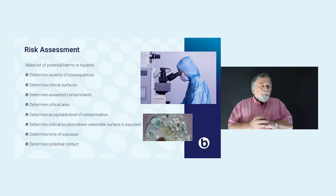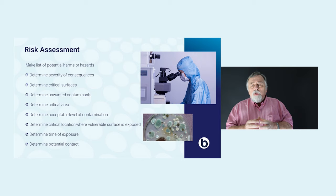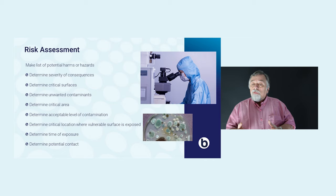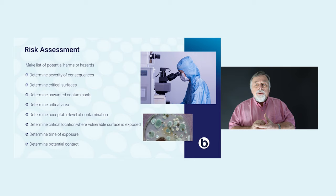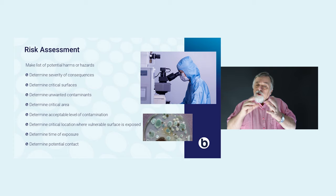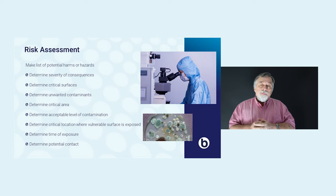The next step is to determine the location where this critical area is exposed to the environment. You have to determine the time of exposure — and if you already know how to reduce this time of exposure, you can take that into account. You also have to look at potential contacts with the critical surface: contacts by people, contacts with instruments, work benches, and equipment. This whole list together will help you do the next step in the risk assessment.